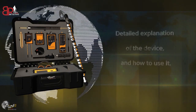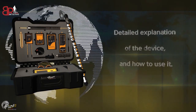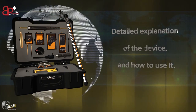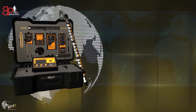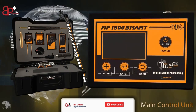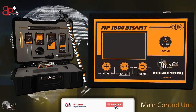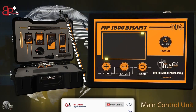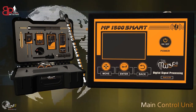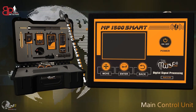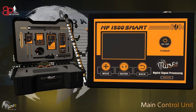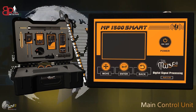Users can operate it individually to confirm the locations of targets underground using multiple systems and technologies. Firstly, the front interface of the main control unit includes a display screen, power button, move button, enter button, and back button.